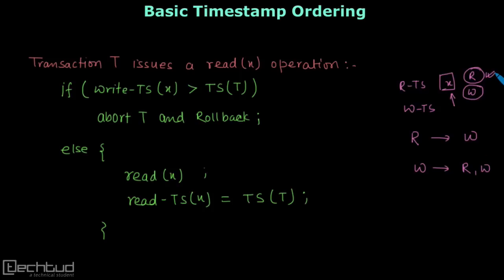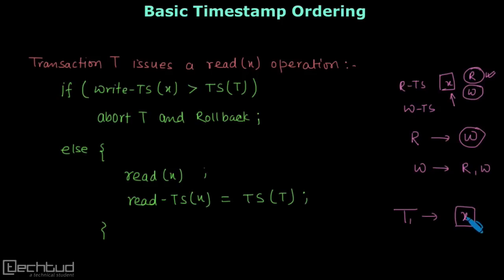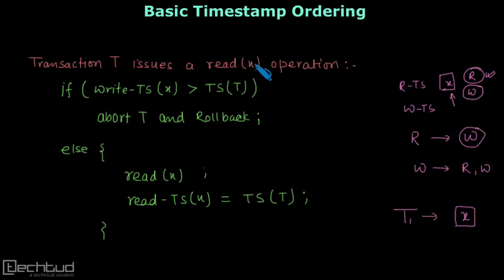Let's start with the read rule, since read has conflict only with write. We need to check the write timestamp of variable x. When a transaction t wants to perform a read operation on variable x, we need to worry about only the writes which have been performed so far. Let us see the pseudo-code: transaction t issues a read x operation, meaning transaction t wants to perform read on variable x.